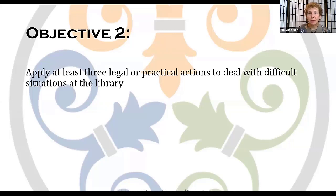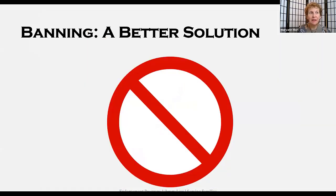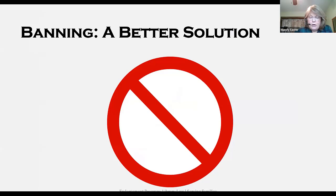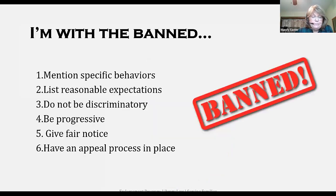Our second learning objective will help you apply three legal or practical situations to deal with difficulties at your library. Many librarians or their boards think the easiest way to deal with a problem situation is simply to ban the patron from library access. Since this issue is not directly addressed in either state or federal law, nor by the American Library Association, the only guidance comes from court cases in which a banned patron sued a public library for violating his First Amendment constitutional right to use the library. Federal courts have ruled in favor of a public library conduct policy that results in patron bans when certain conditions are clearly met. Number one: the policy is written to include specific behaviors that are particularly egregious and will result in being banned. Note that the length of time banned does not have to be specified in the policy and can be determined on a case-by-case basis.